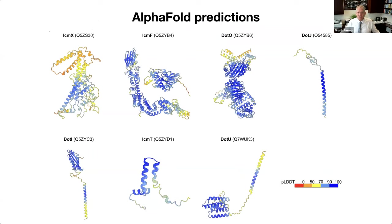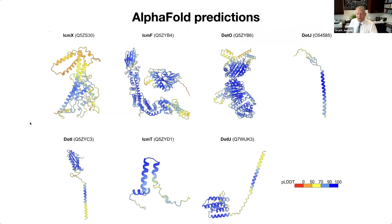The Waxman lab purified the conjugative T4SS from an E. coli strain and solved its structure to near-atomic resolution - absolutely beautiful. There was high flexibility, dealt with via local refinements. A number of these proteins are homologs of our Legionella type 4 secretion system. Also last year, AlphaFold began predicting with real confidence the structures of proteins we didn't have yet - ICMX, ICMF, dot O, dot J, and others in the Legionella system. Blue coloring indicates high confidence, yellow indicates lower confidence; core regions are mostly high confidence.